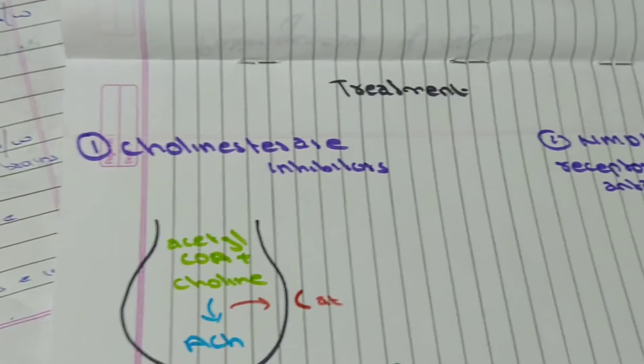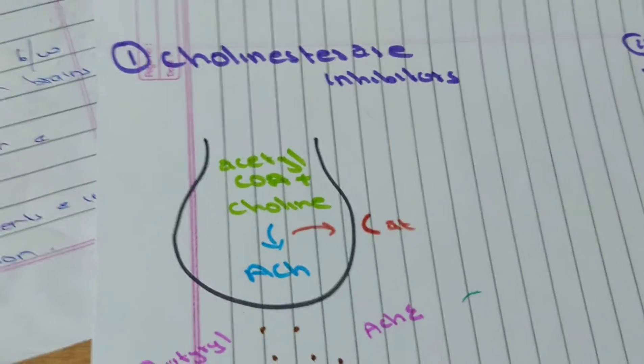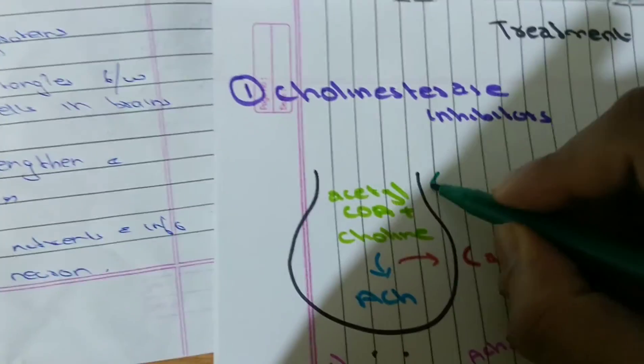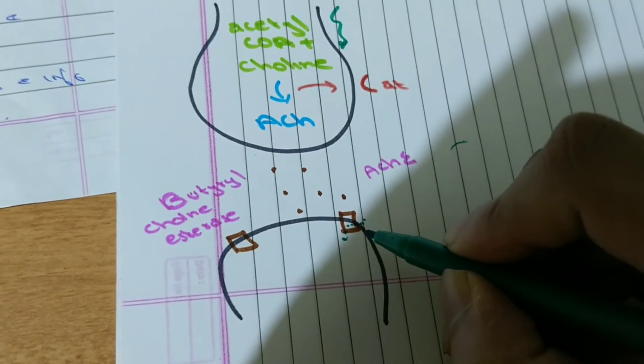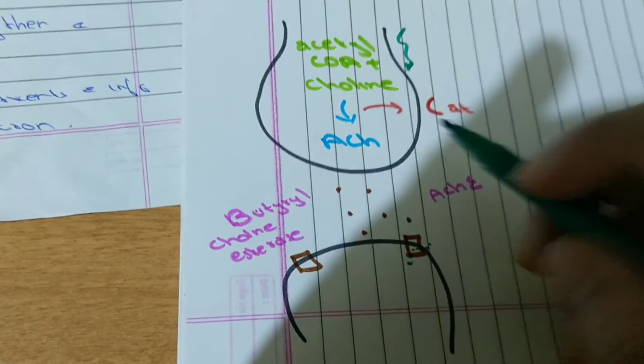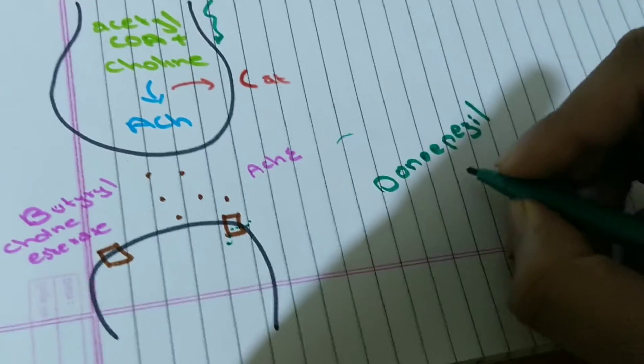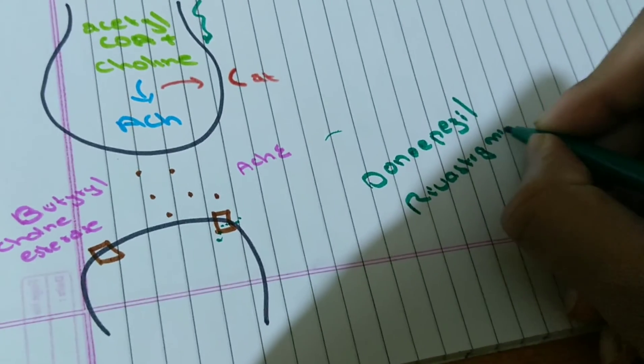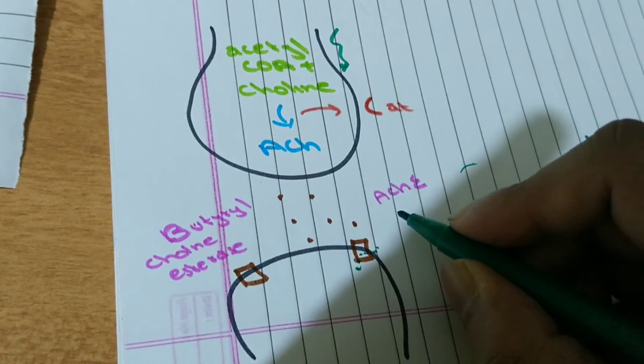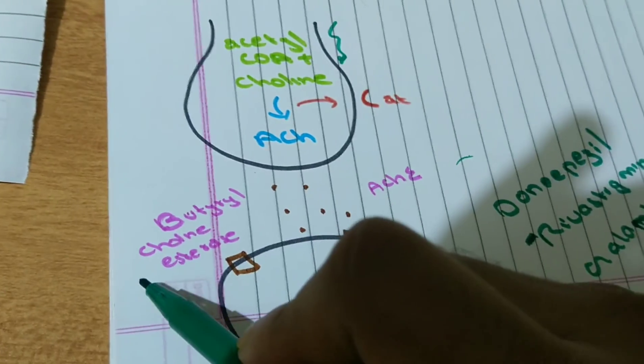The treatment of Alzheimer's disease is very limited. We have two types of drugs: cholinesterase inhibitors and NMDA receptor antagonists. Acetylcholine is synthesized in our body using acetyl coenzyme A and choline using choline acetyltransferase. When an action potential reaches, acetylcholine is released into the synapse which is taken by receptors in the postsynaptic brain. Two enzymes - acetylcholinesterase and butyrylcholinesterase - degrade acetylcholine. Drugs such as Donepezil, Rivastigmine and Galantamine inhibit these enzymes. Only Rivastigmine is useful against both.